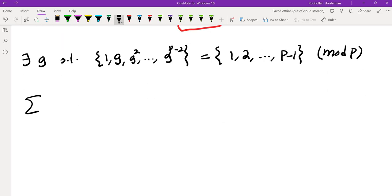So in other words, if I take this sum of n^j from n = 1 to P-1, instead of 1 through P-1, I can look at powers of G. So (G^k)^j where K ranges from 0 to P-2. Now this is a geometric sum. How do we evaluate a geometric sum?